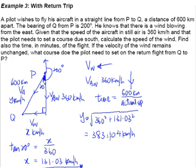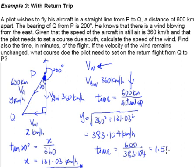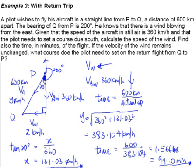This is our actual speed. To find the time, we simply take 600 divided by the actual speed of 383.104, giving 1.566 hours. But the question wants the answer in minutes. Converting 1.566 hours into minutes, we get 94.0 minutes, correct to three significant figures.